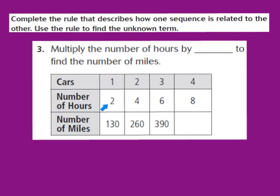My first number of hours is 2 and my first number of miles is 130. If I'm not sure about the basic facts — 2 times what gives me 130 — I can use the inverse operation, which is division. So I'll take 130 and divide by 2. In my division, 2 can't go into 1, so I'll put a placeholder above the 1. Now 2 goes into 13 six times — write 6 above the 3. Six times 2 is 12; subtract from 13, leaving 1. Drop down the 0. Two goes into 10 five times — write 5 above the 0. Five times 2 is 10, with no remainder. So 2 times 65 would take me to 130.